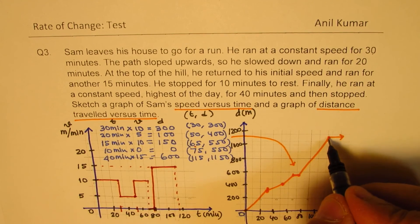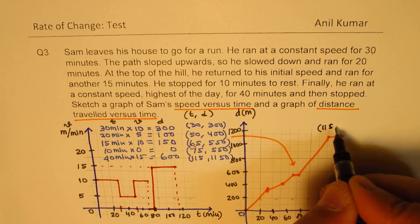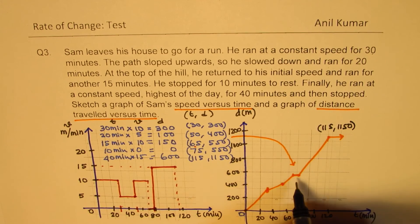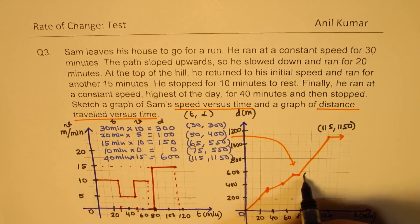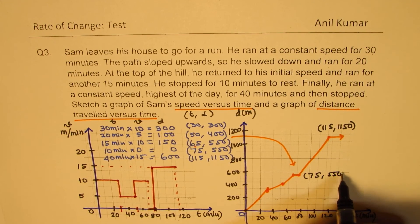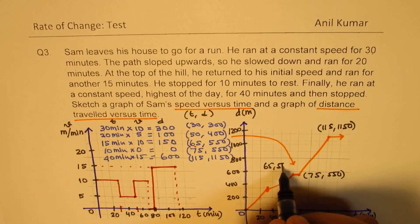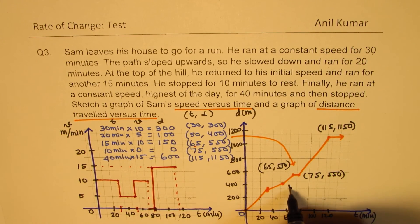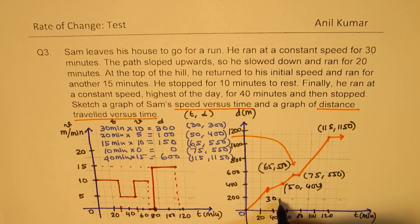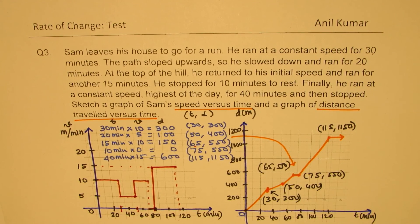Final point is kind of very critical. So let's write this as 115, 1150. You could actually write all the points also from this particular table. 75, 550. Here we have 65, 550. And then we have 50, 400. And here we have 30, 300. So that gives you absolutely correct graph for distance versus time when you had assumed some velocities for the time duration given. So I hope that helps. So this is the right approach to do it.